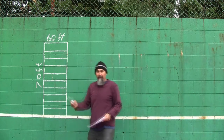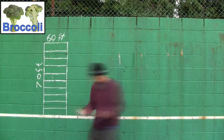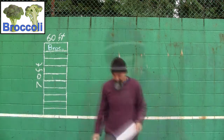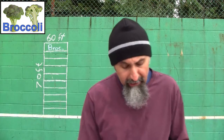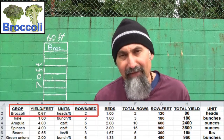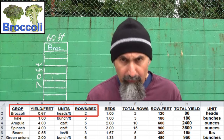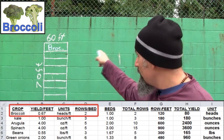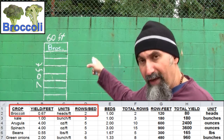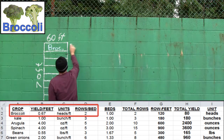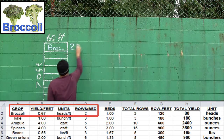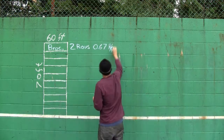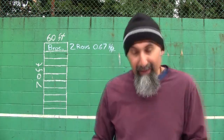In the first bed we're going to plant broccoli. The yield for broccoli is 0.67 heads per foot, and we can put in two rows per bed. So we're going to have two rows of broccoli with a yield of 0.67 heads per foot.